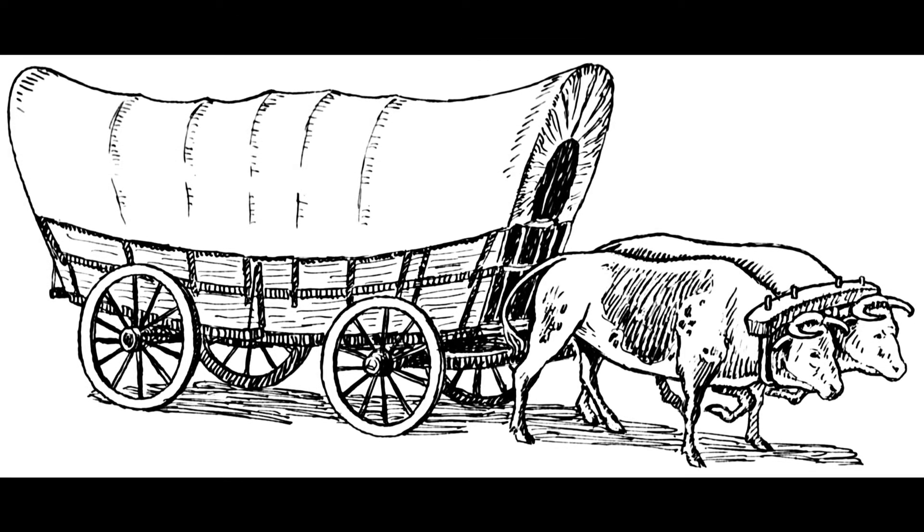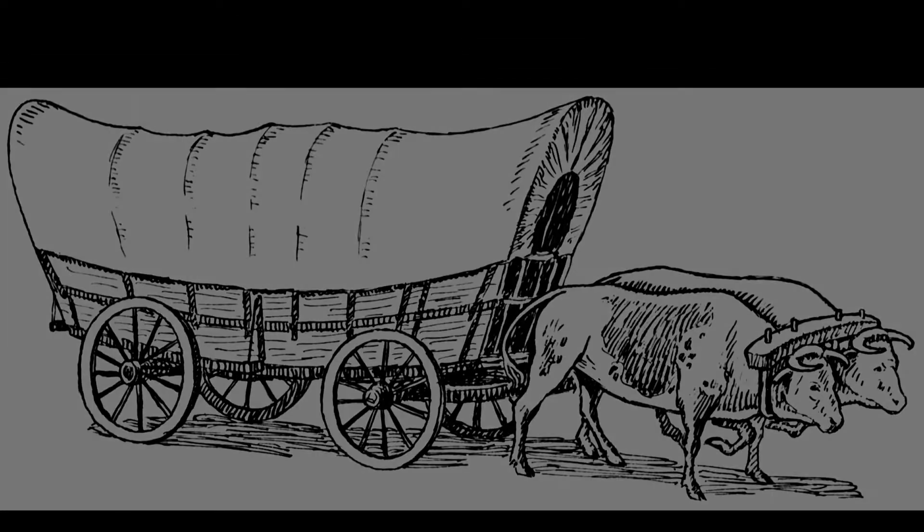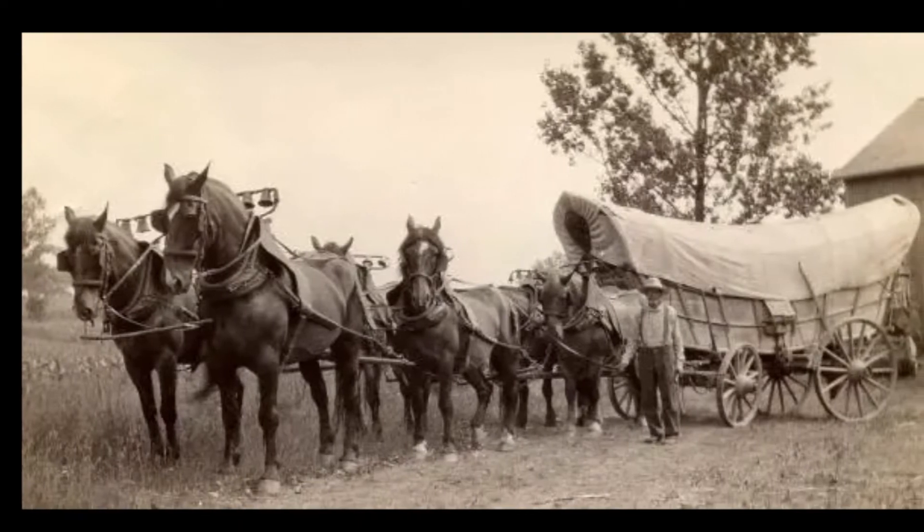During the American Expansion West, the settlers would commonly sell their house and belongings and purchase a Conestoga wagon to make the trip.